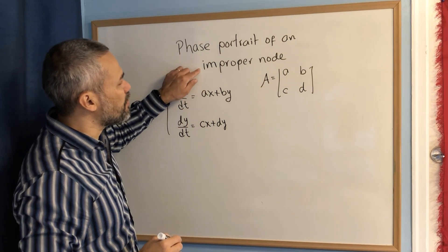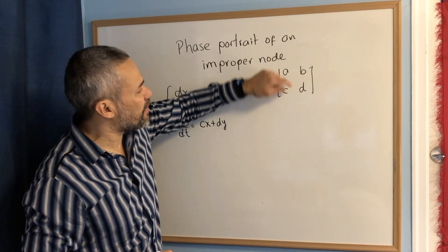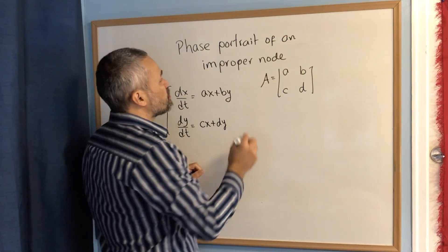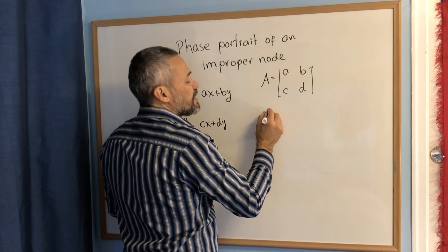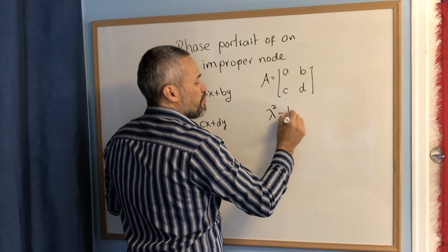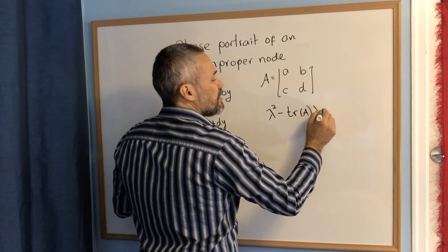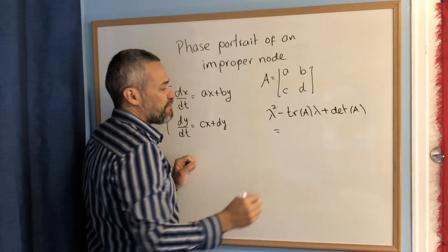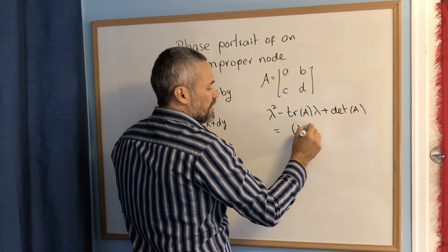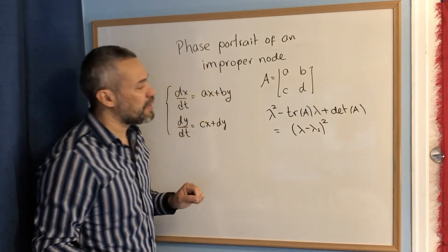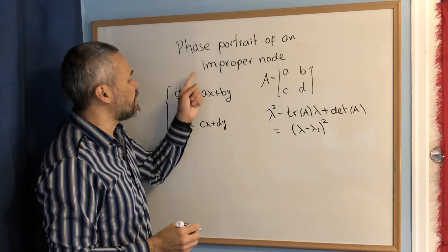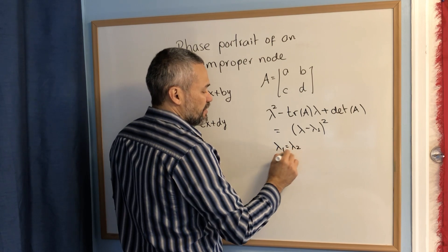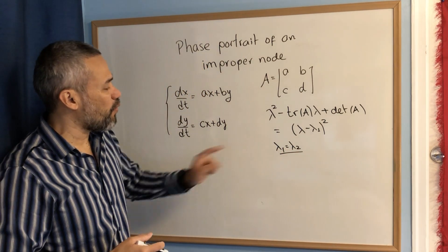To have an improper node, we assume that this matrix is not diagonal — that means either b is different from zero or c is different from zero. Also, to have an improper node, the characteristic polynomial — which is λ² minus the trace of A times λ plus the determinant of A — must be a perfect square, meaning it looks like (λ − λ₁)². With this, the matrix has only one eigenvalue: λ₁ = λ₂.